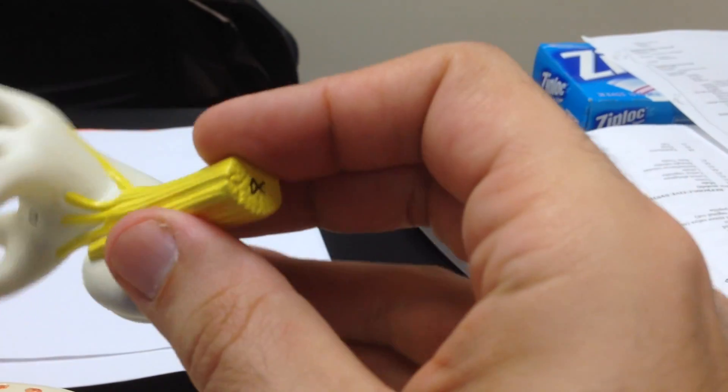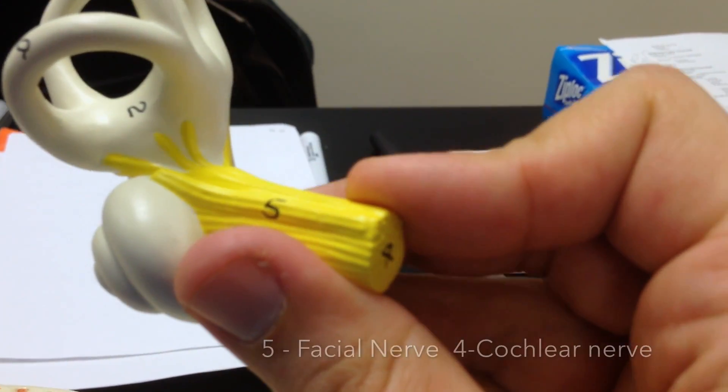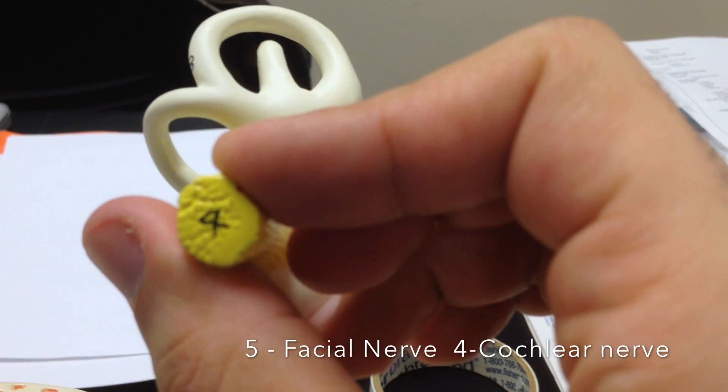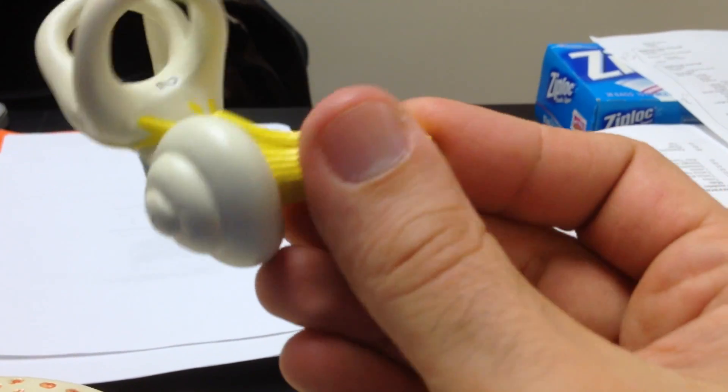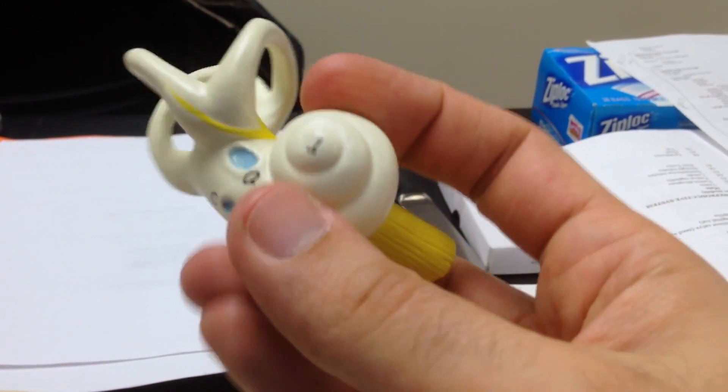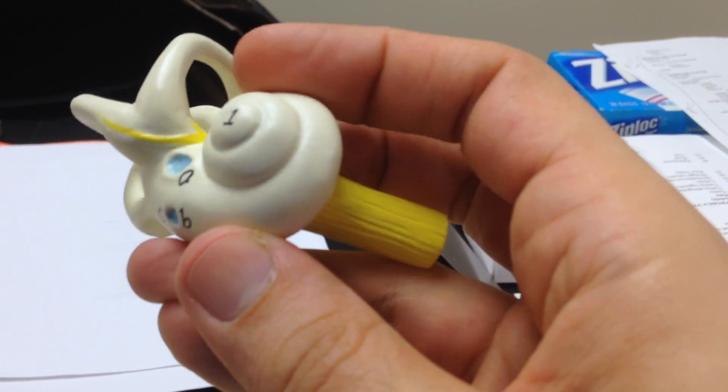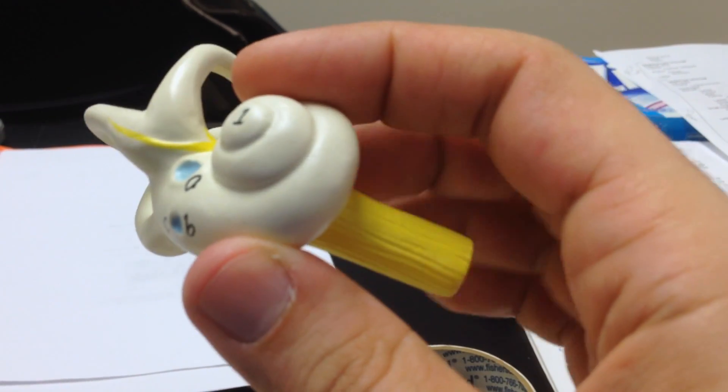Now here I have two nerves. Labeled S5, a branch of the facial nerve, and labeled S4, the cochlear nerve. So the cochlear nerve innervates the cochlea.